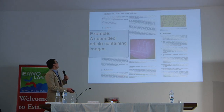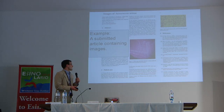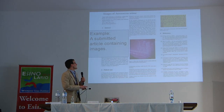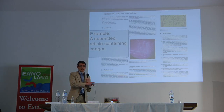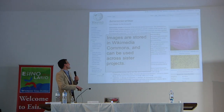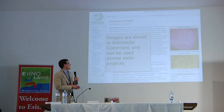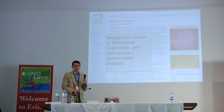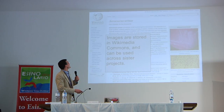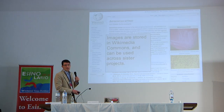Here's an example of how an article may look in Wikiversity Journal of Medicine. This one is about a particular type of bacteria, and it contains two images. These images are stored in Wikimedia Commons and can then be used across Wikimedia projects, just as you see here for the corresponding Wikipedia article.